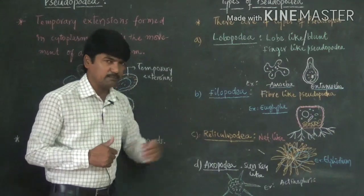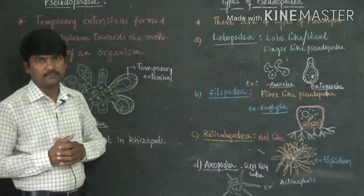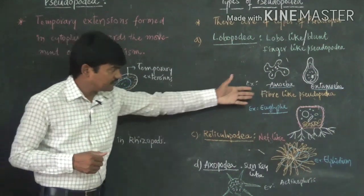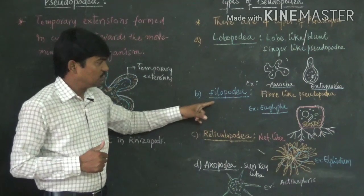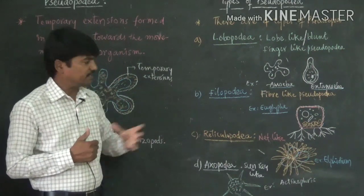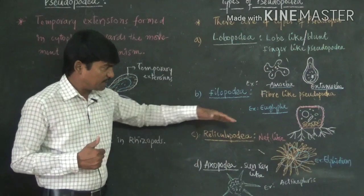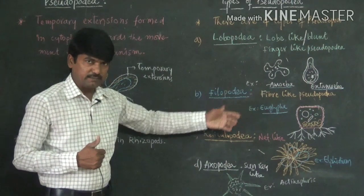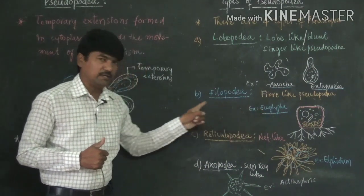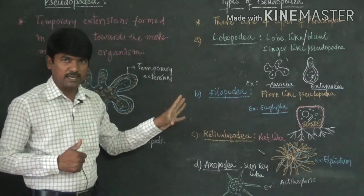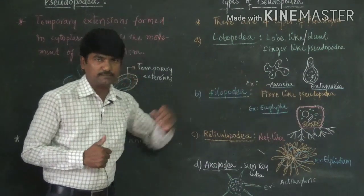The second type is filopodia. 'Filo' means fiber-like, so fiber-like pseudopodia are known as filopodia. Euglypha is the example for filopodia — fiber-like pseudopodia are present in Euglypha.